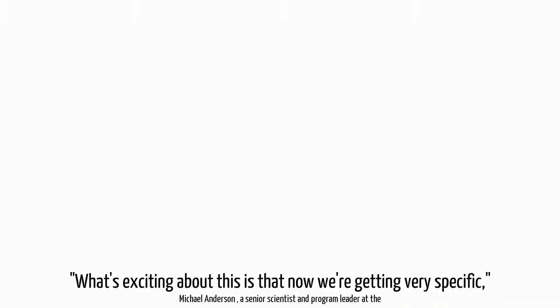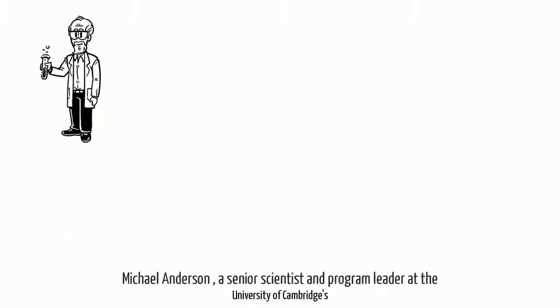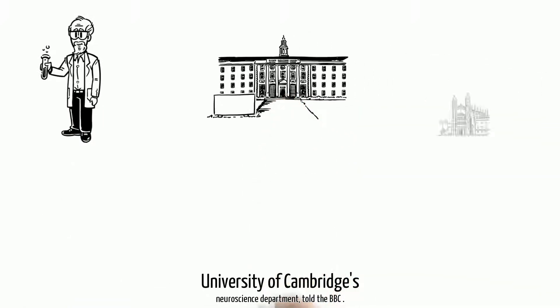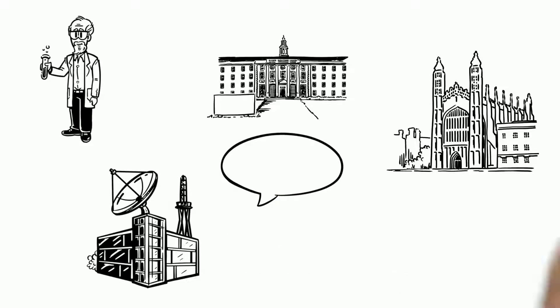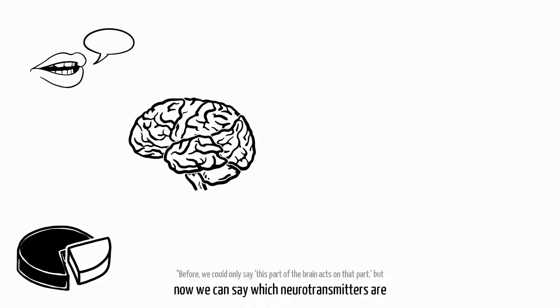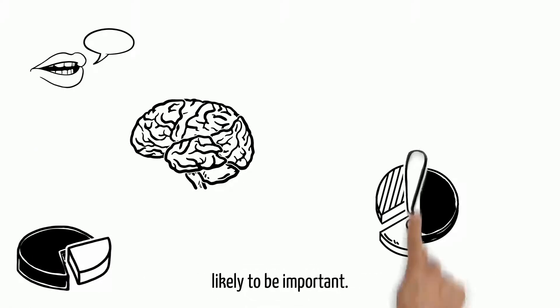What's exciting about this is that now we're getting very specific, Michael Anderson, a senior scientist and program leader at the University of Cambridge's neuroscience department, told the BBC. Before, we could only say this part of the brain acts on that part, but now we can say which neurotransmitters are likely to be important.